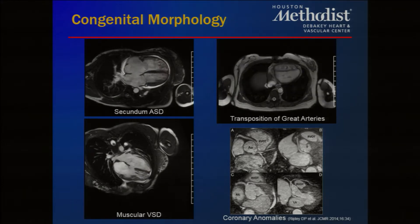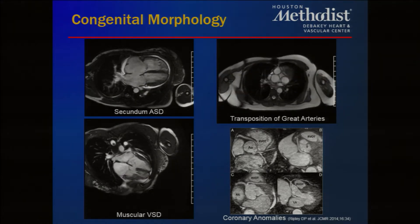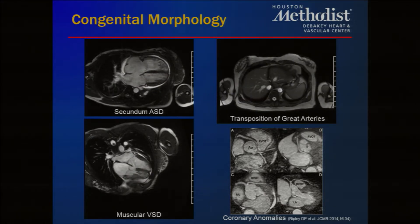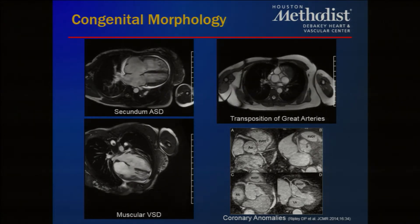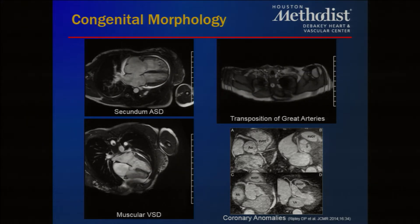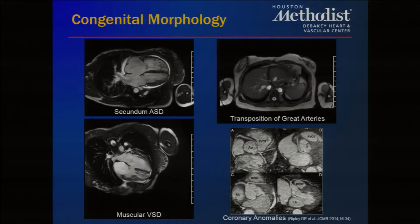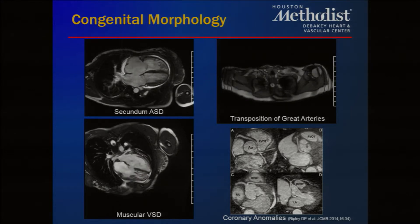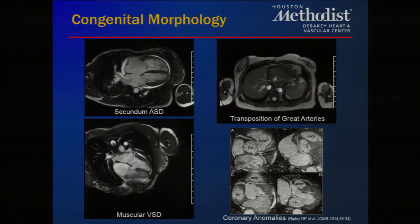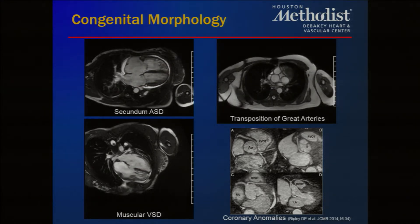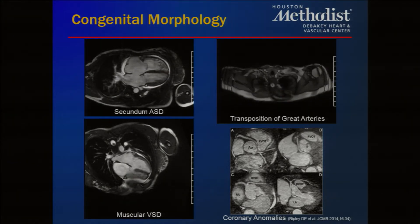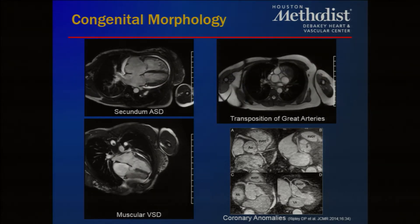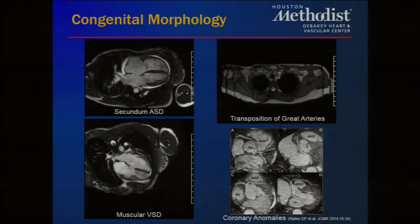Another big use of cardiac MRI is for congenital assessments. We are often called upon to look at atrial septal defects, muscular ventricular septal defects, and other simple congenital heart disease defects. We also help with very complex congenital heart disease, such as transposition of the great arteries, which remains a challenge from the echocardiographic standpoint. We can look at coronaries as well, but acknowledge that cardiac CT has superior spatial resolution for coronary assessment.